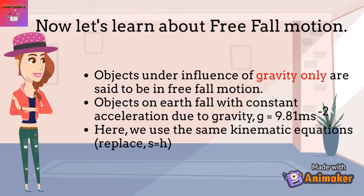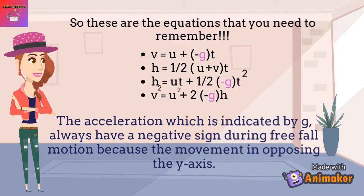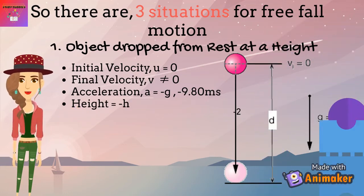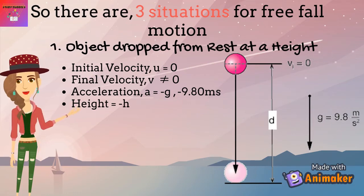Next, let's learn about free fall motion. Objects are under free fall motion if they are under the influence of gravity only. They fall with constant acceleration due to gravity, which is a equals negative 9.8 m/s² — negative because it's falling down. We still use the same kinematic equations, but s is replaced by h. The first situation is when an object is dropped from rest: initial velocity is 0, final velocity is non-zero, acceleration is negative 9.8, and height is negative H.